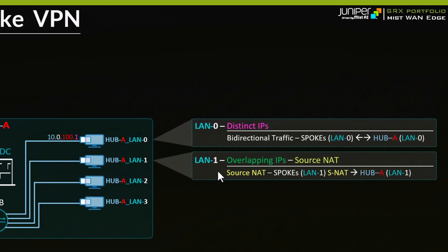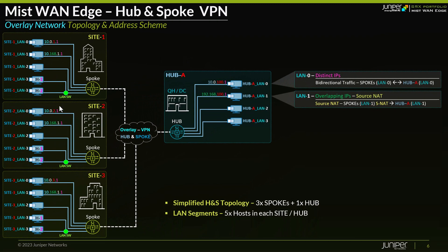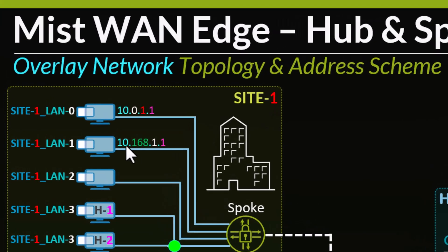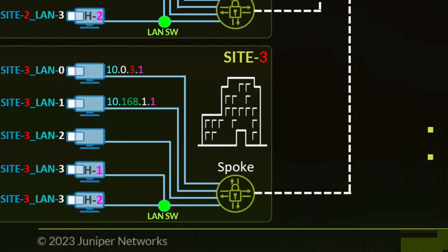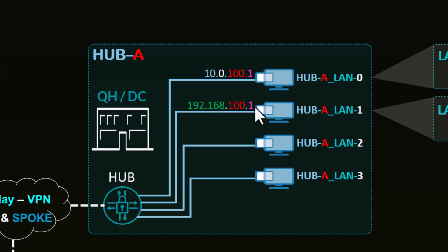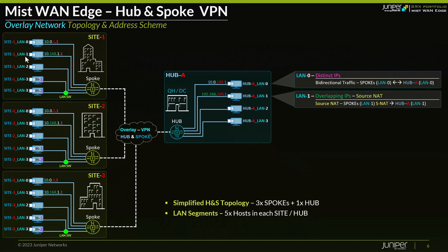LAN 1 is going to be used to emulate a use case where I have overlapping IPs in each and every site. For example, site 1 has 10.168.1.1 as the host, and I have the same IP in site 2, 3, and so on. On the hub side there's 192.168.100.1. When LAN 1 on the spoke side is communicating and sending traffic towards LAN 1 of hub A, we will need to source NAT on the spoke so the return traffic is returned to the right destination. That's used to show how you configure source NAT from the overlay network.